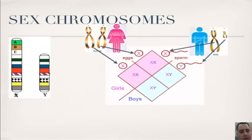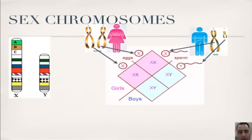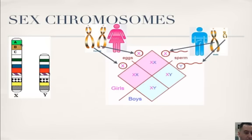The X chromosome has a lot of information — it has many genes that are not found on the Y. That's why a lot of sex-linked traits happen to be on the X chromosome, like colorblindness, hemophilia, male baldness, and other things.